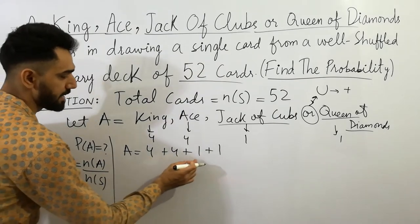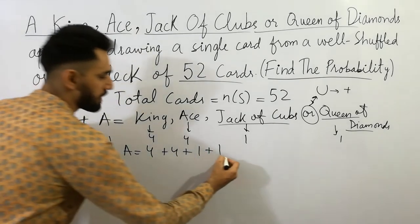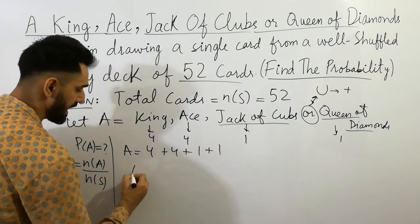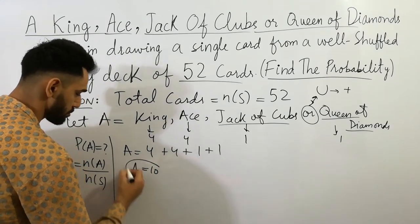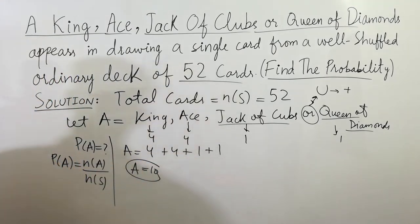So here four plus four plus one plus one we get four, four, eight, nine, ten. So here the value of A is equal to ten.